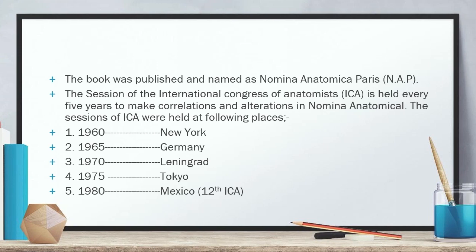The session of the International Congress of Anatomists is held every five years to make correlations and alterations in Nomina Anatomica. The sessions of the ICA were held at the following places: in 1960, New York; in 1965, Germany; in 1970, Leningrad; in 1975, Tokyo; and in 1980, Mexico — the 12th ICA.